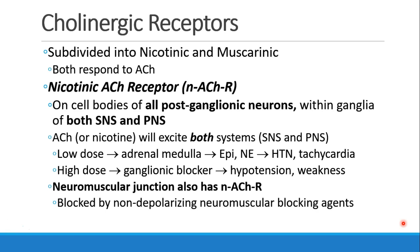The nicotinic acetylcholine receptor is found in two specific places. On the cell bodies of all postganglionic neurons — that means in the ganglia — and this is in both the sympathetic and the parasympathetic system. In this case, acetylcholine or nicotine, because they're nicotinic, will excite both systems, so the sympathetic and parasympathetic will get excited at the level of the ganglia.